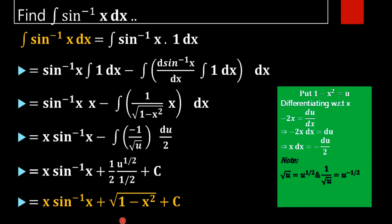Here we used two methods — integration by parts and integration by substitution — to get the required result: the integral of sin inverse x dx equals x sin inverse x plus square root of 1 minus x square plus c.